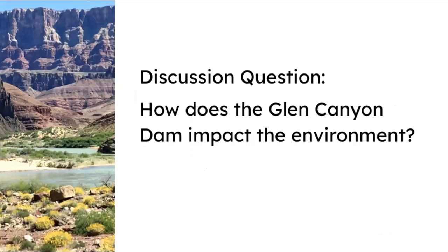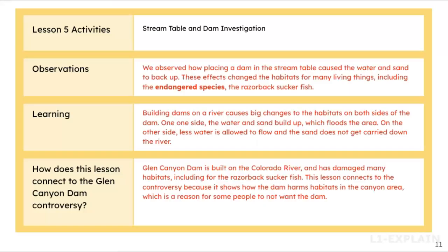In the Explain portion of the lesson, students will engage in a class discussion about their observations and learning from the activity. Use the provided questions to guide your discussion around the question: How does the Glen Canyon Dam impact the environment? The goal of this class discussion is to analyze student observations and identify how placing a dam in a river can impact the environment and, specifically, the habitat of the razorback suckerfish.